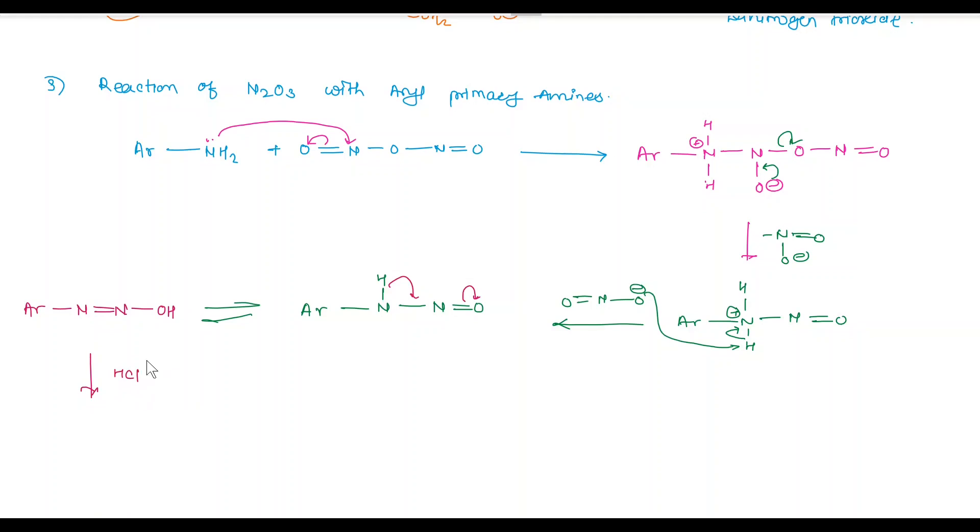In next step, in presence of acid, the protonation takes place. And here we get ar bond nitrogen double bond nitrogen bond, here oxygen positive. In next step, the lone pair of nitrogen acts as a driving force. And loss of water molecule takes place. And here we get diazonium, that is aryl diazonium salt. Here Cl negative, here nitrogen carries positive charge. This is your diazonium salt.